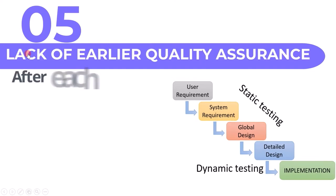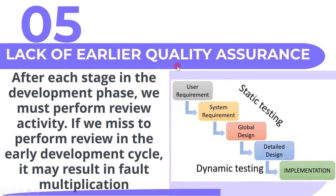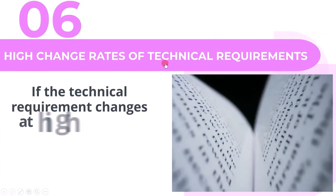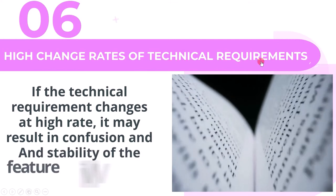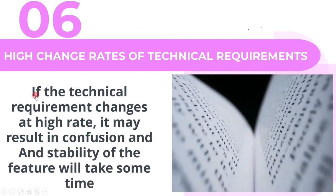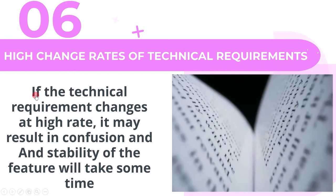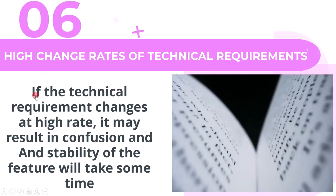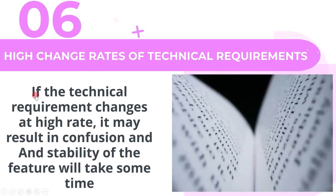The fifth project risk is lack of earlier quality assurance. After each stage in the development phase, we must perform a review activity — missing reviews in the early development cycle may result in fault multiplication. The sixth project risk is high change rates of technical requirements, which may result in confusion and delay in feature stability.